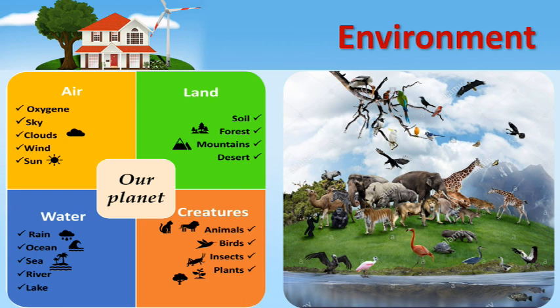Finally, creatures — besides us humans, we can name animals, birds, insects and plants. So these are the four main constituents of our planet, or our environment in general.